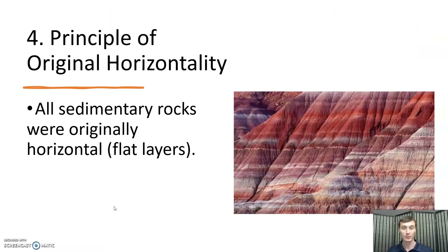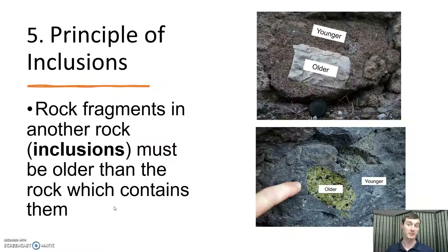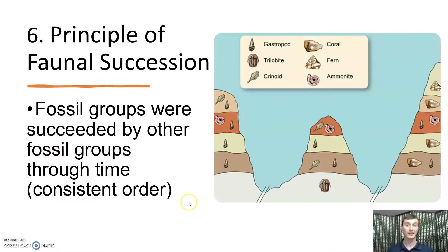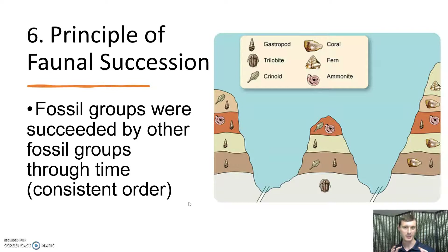The next principle is original horizontality: sedimentary rocks are all originally horizontal bodies. Principle number five is the principle of inclusions: if we have a rock fragment — an inclusion — contained within another rock, the inclusion must be older than the rock which contains it. Our last principle is faunal succession: the fossils we find in the field occurred in a certain order, reflecting an evolution of species over time that does not repeat. By looking at fossils and putting them in order, you can determine the age of rocks.